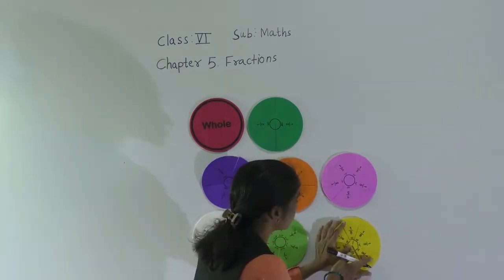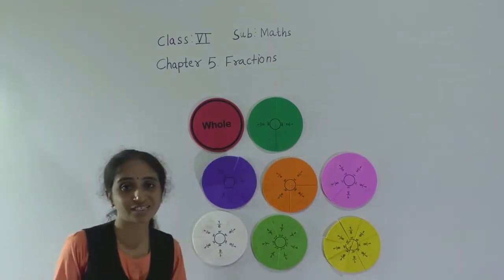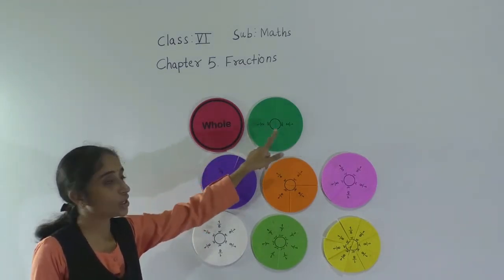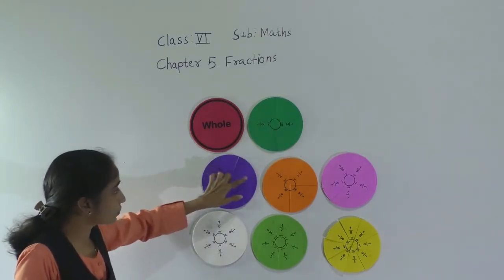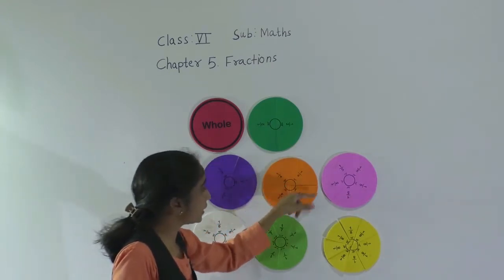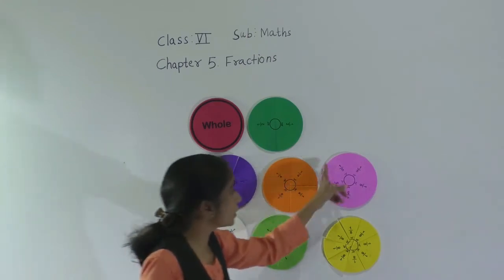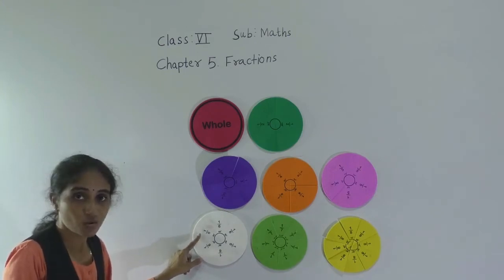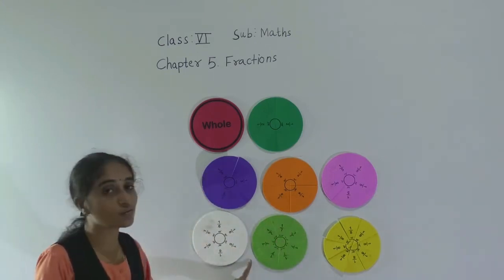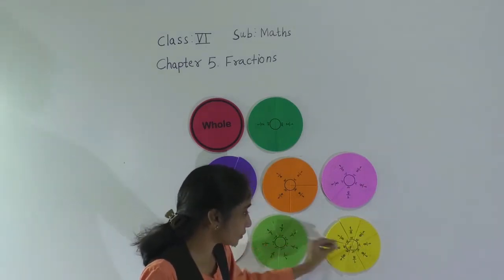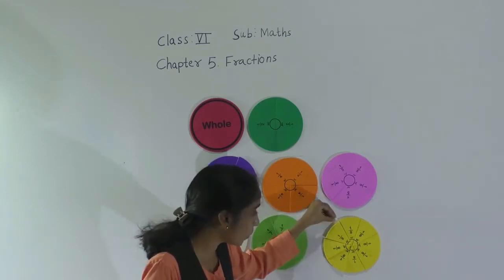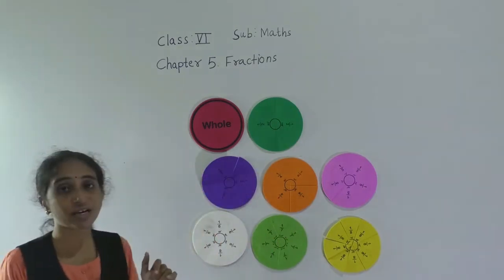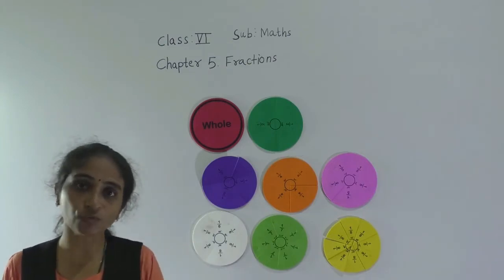So, what is a fraction? Fraction is a part of whole. This is the whole. This figure divided into two equal parts gives half. Divided into three equal parts — each part is one third. Four equal parts — each part is one fourth. Five equal parts — each part is one fifth. Six equal parts — each part is one sixth. Seven equal parts — each part is one seventh. Eight equal parts — each part is one eighth. Let's learn fraction as a division.